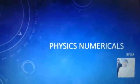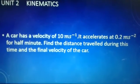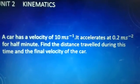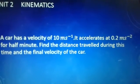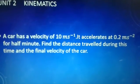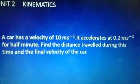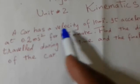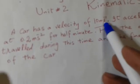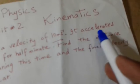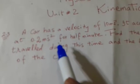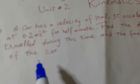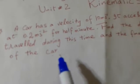My name is Shahzai Badshir. The numerical: a car has a velocity of 10 meters per second and it accelerates at 0.2 meters per second squared for half a minute. Find the distance traveled during this time and the final velocity of the car.